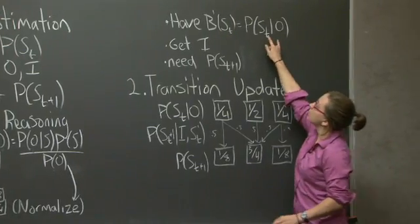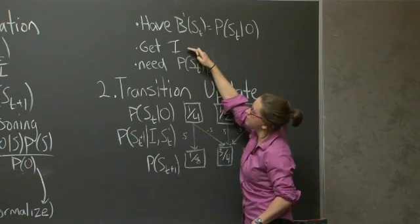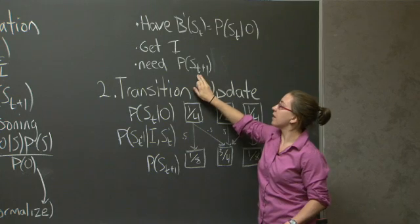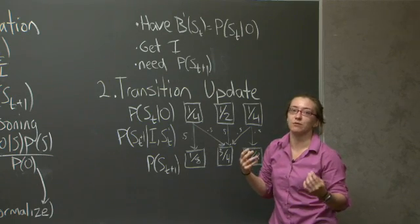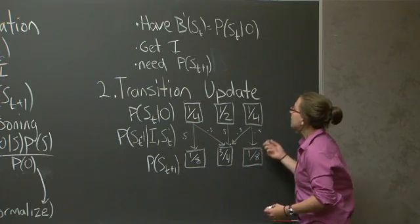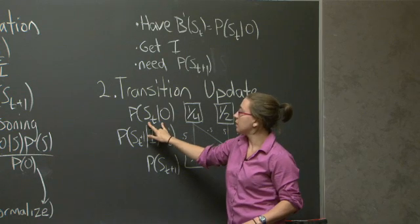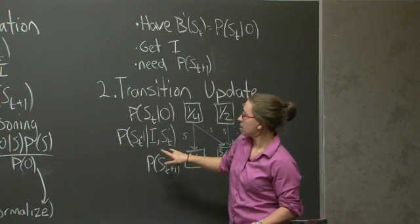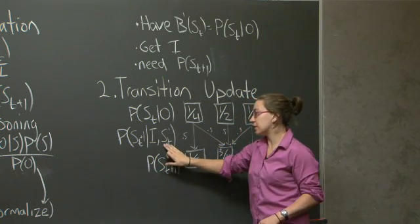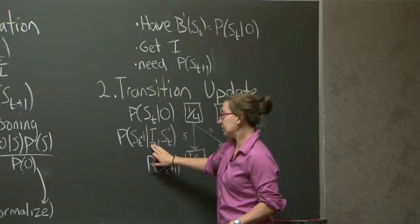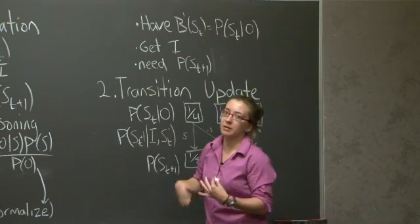At this point I've accounted for the observation, but I haven't accounted for the action on the system — that's the next step. We're going to take the results of Bayesian reasoning, sometimes referred to as b'(s_t), and take the action to find the distribution over states as a consequence of a single time step. The second step is referred to as a transition update. We take our updated belief and apply our transition distribution — our specification for what happens given a current state and an action has been taken — and that gives us a probability distribution over the new states.